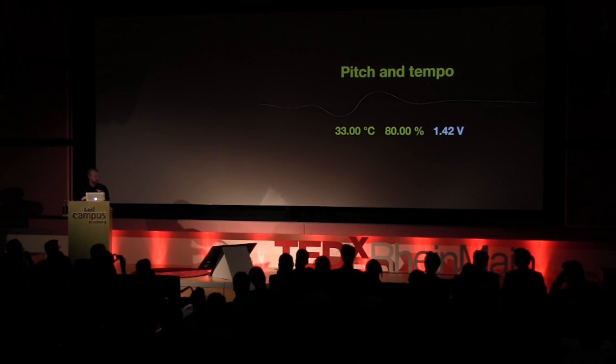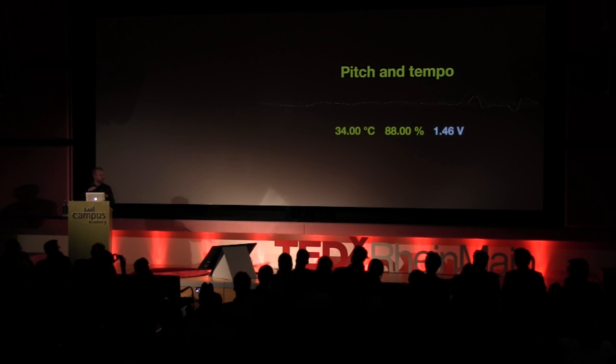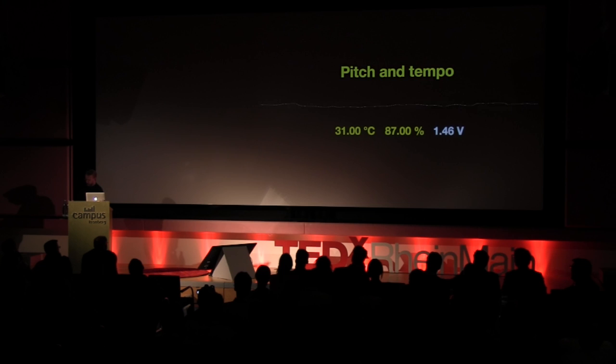The randomly generated chords are moving towards a higher register according to rising temperature, and the heartbeat is moving towards a higher tempo according to rising humidity. So the humidity is very high right now, so there's really a high tempo of the heartbeat. When I remove it, the input will slowly move back to normal state, and so will the composition.